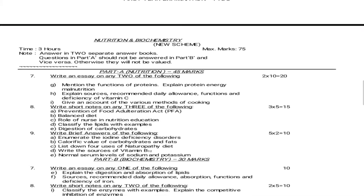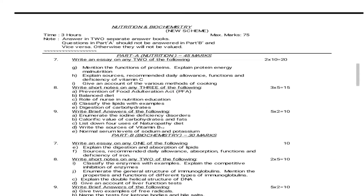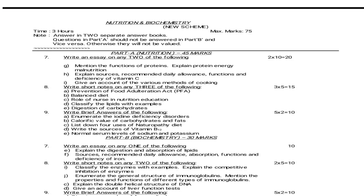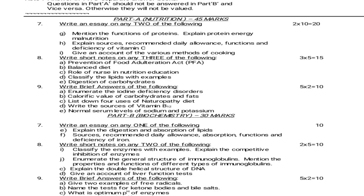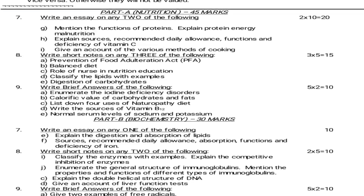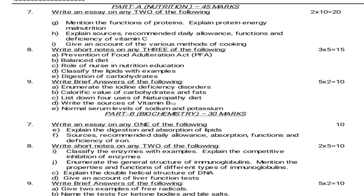The first two question papers are from November 2012. Since the font size is very small, I am reading each and every question. First, Nutrition essay questions — out of 3, you have to answer any two. Mention the functions of proteins. Explain protein energy malnutrition. Explain sources, recommended dietary allowances, functions and deficiency of vitamin C. Give an account of the various methods of cooking. Next is short notes: Prevention of food adulteration — Act PFA.